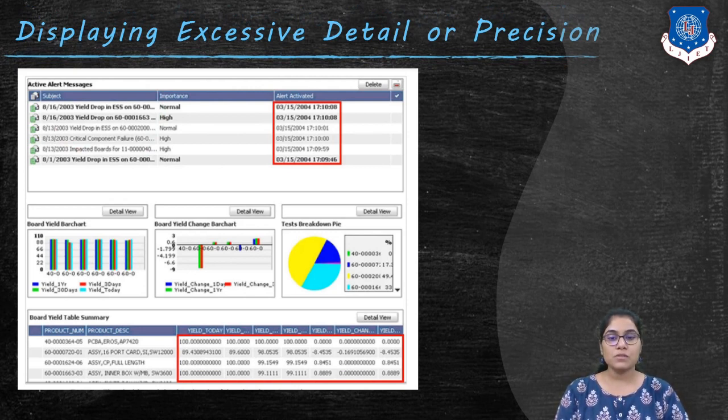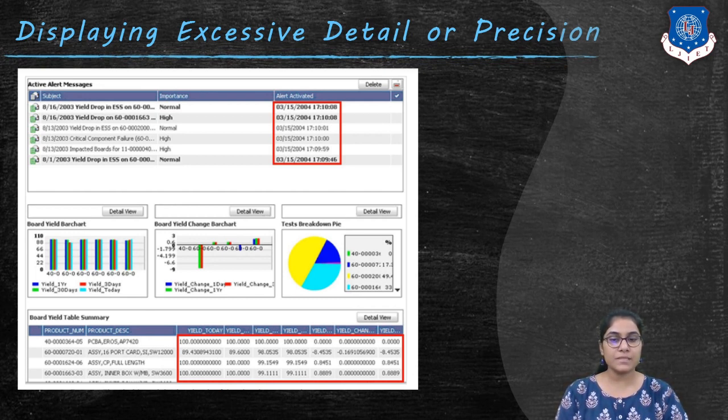The next design issue is displaying excessive detail or precision. To support the purpose of rapid monitoring, dashboards should never display information that is more detailed or precise than necessary. To do so would force the viewer to process levels of data that are irrelevant to the task at hand.